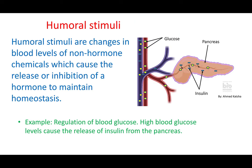Humoral stimuli means the stimulus comes through the fluids of the body. The classic example is the release of insulin. Insulin is secreted by the pancreas in response to high blood sugar levels — specifically glucose. This glucose is dissolved in the blood, which is one of the body's fluids. So glucose traveling through the blood stimulates the pancreas to release insulin — that is the humoral stimuli.